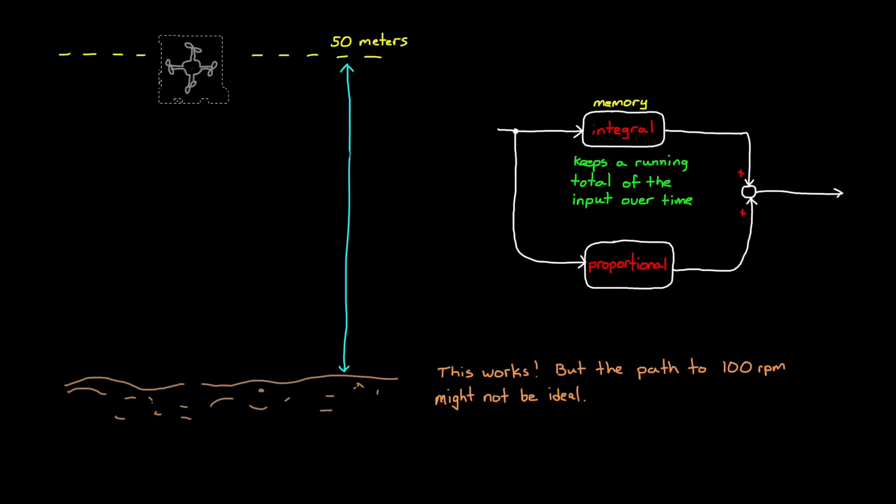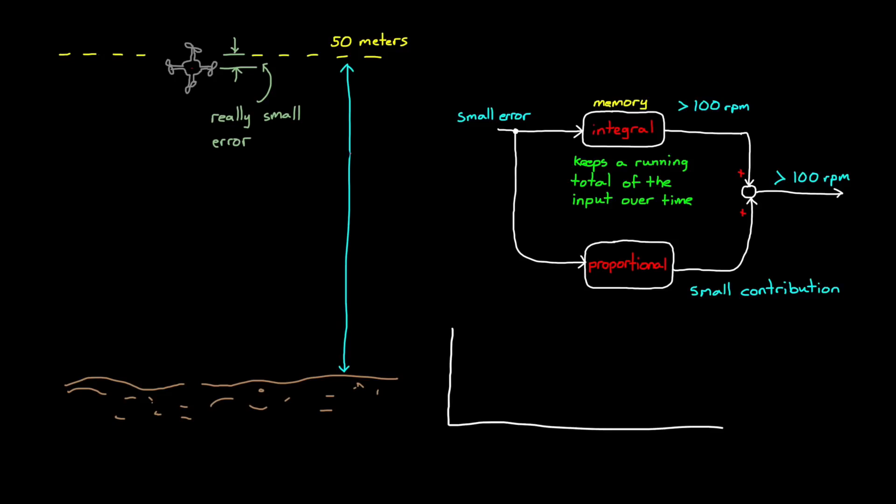Imagine this situation. Right before we get to 50 meters, there's an interesting situation that can occur. The proportional path is basically zero, since at this point the error is so small. But depending on how the drone got to this height, the integrator may have summed to a value over 100 RPM. This would cause the drone to keep rising, which is what we want since we're below the 50 meters. However, to remove that excess propeller speed, the drone will have to go higher than our goal to create a negative error. However, this negative error, when summed, lowers the output of the integrator and slows the propellers down. This overshooting of the goal might not be desired.